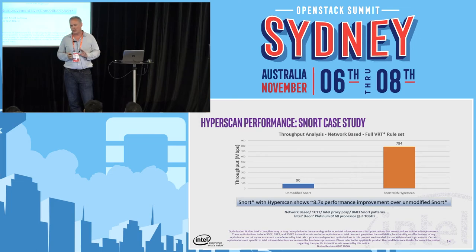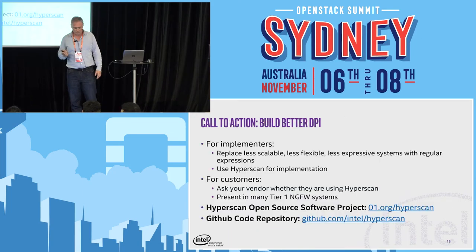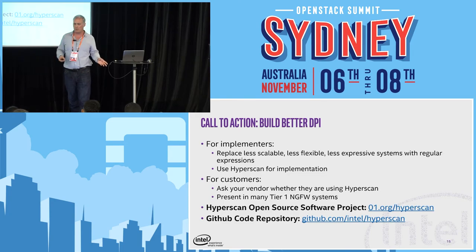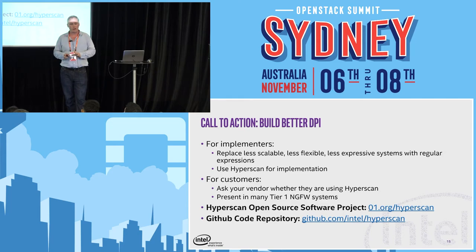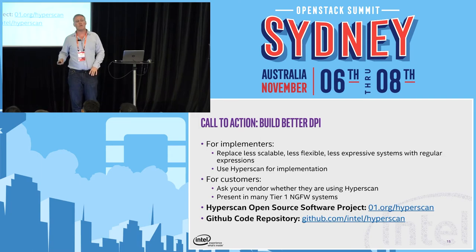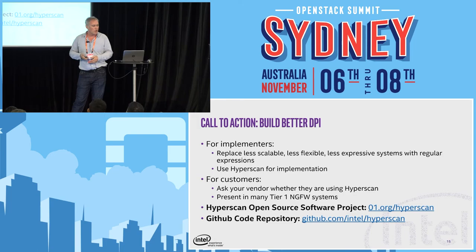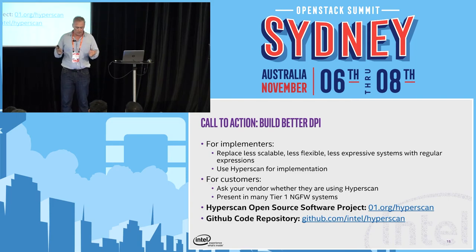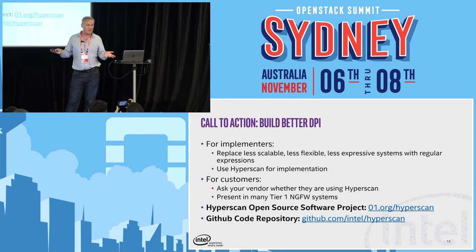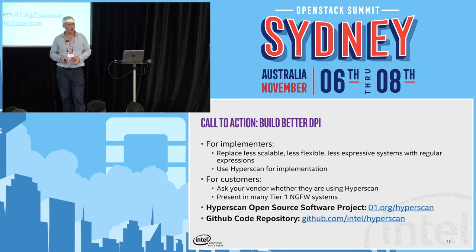The call to action: if you're an implementer building firewall-as-a-service systems, and you're doing something based on literal matches or line-by-line DPI, you should try replacing that with regexes — and use Hyperscan to do that, because we're really great and better than all the other regex systems. If you're an end user of these systems, you should be exploring whether you can use regex to express your detection logic, and asking whether your vendor is using Hyperscan. We're available as an open source project at 01.org/hyperscan and on GitHub. We develop in the open — there's no Hyperscan Light versus Hyperscan Heavy. What we do, we put on GitHub, and everyone can use it.